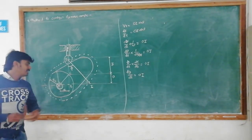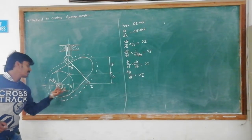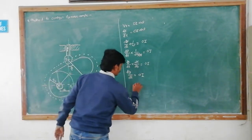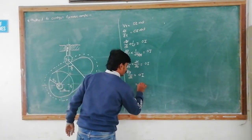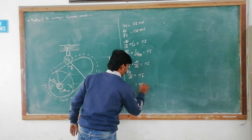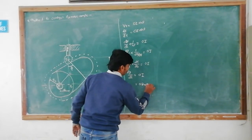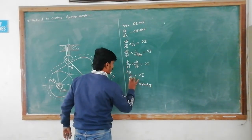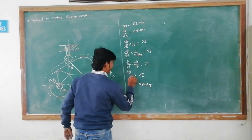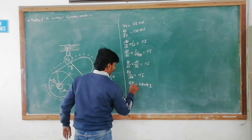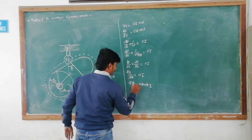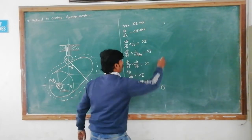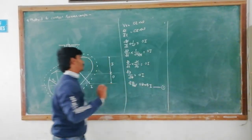We can write OI = OB + IB, so dy/dθ = OB + IB. We mark this as equation 1.